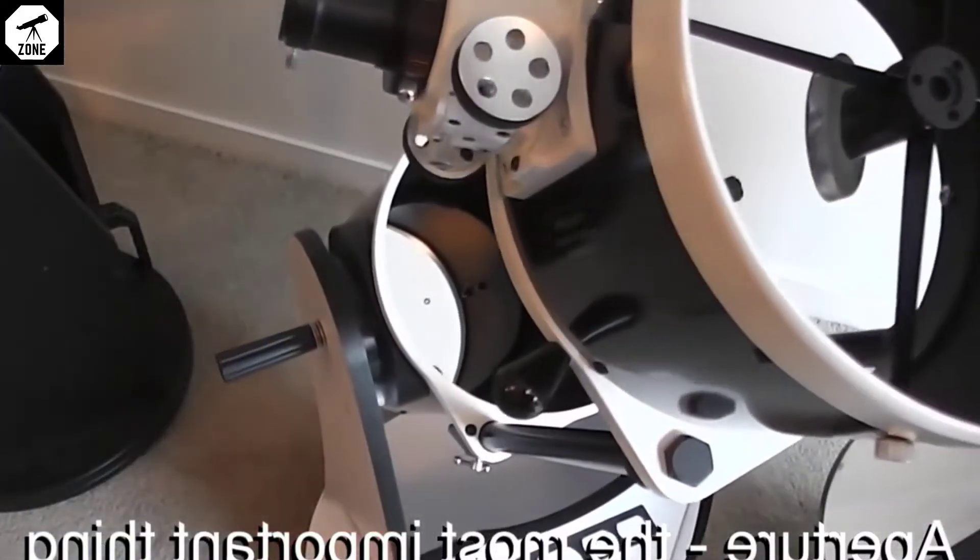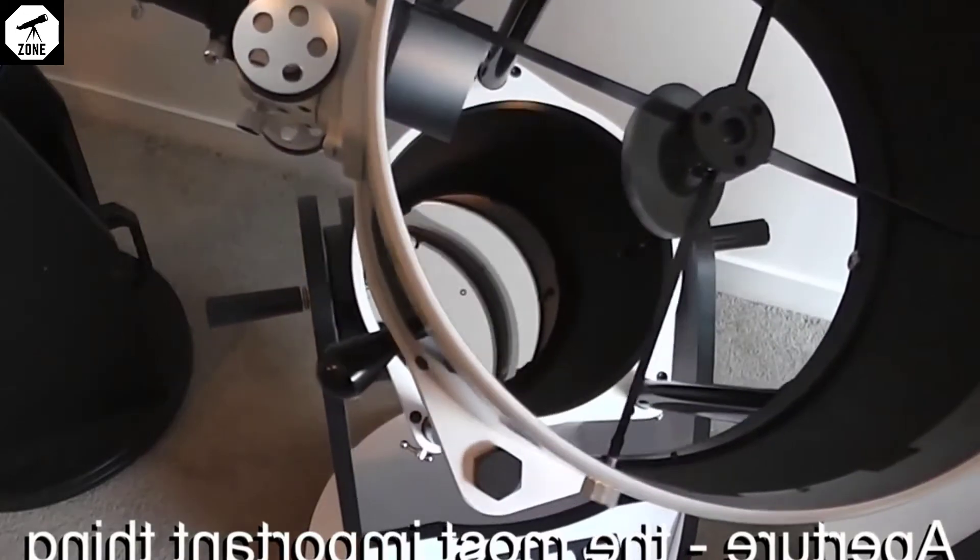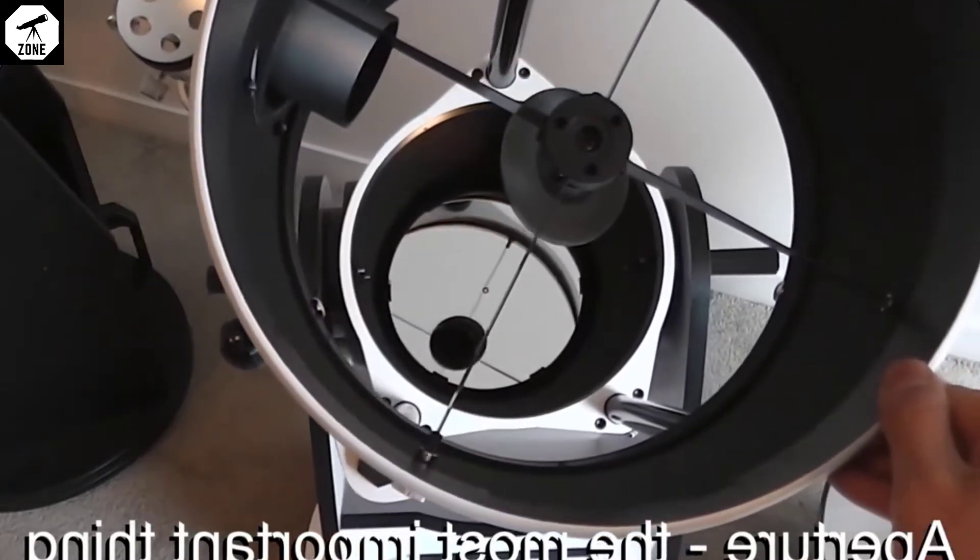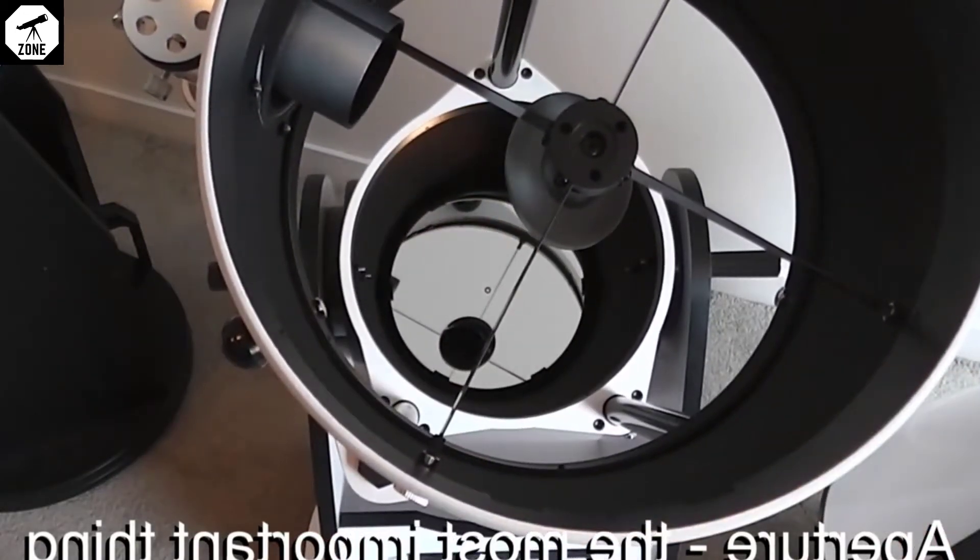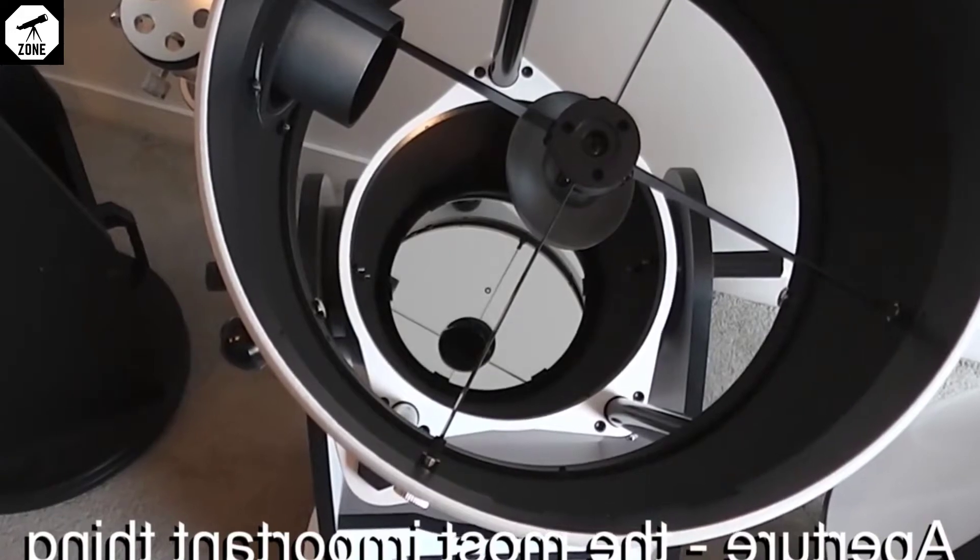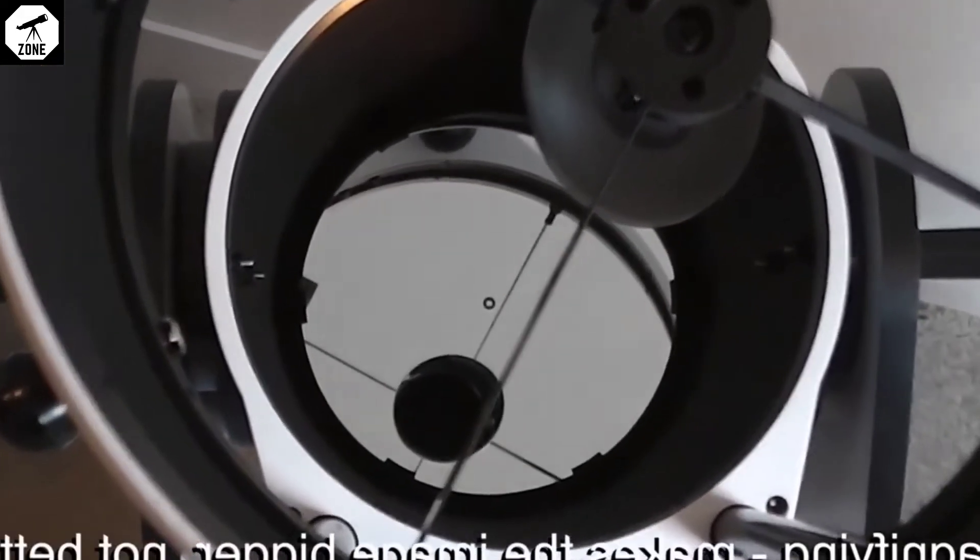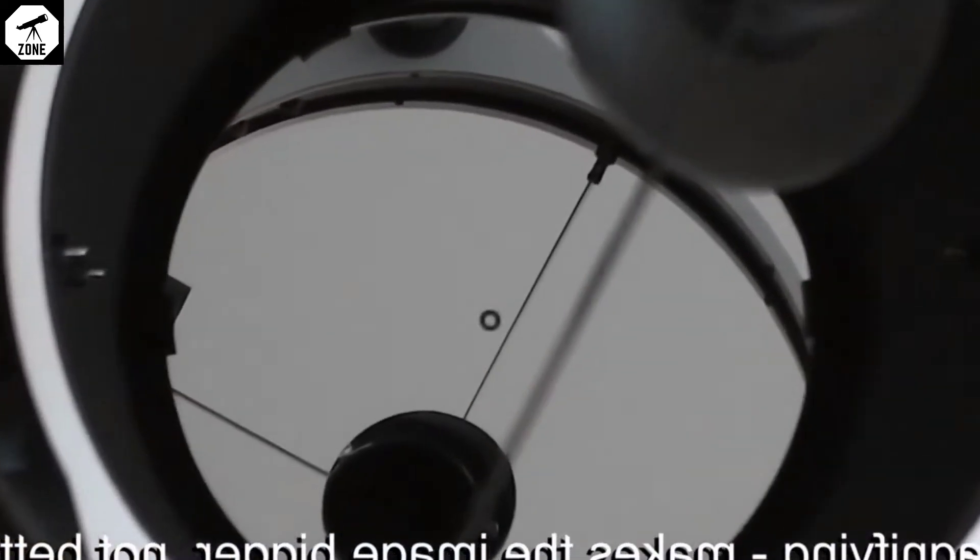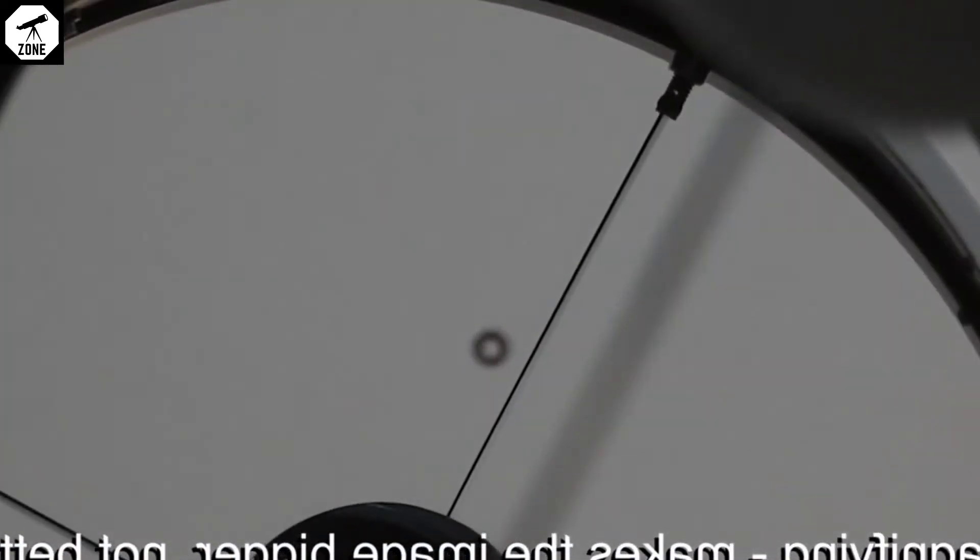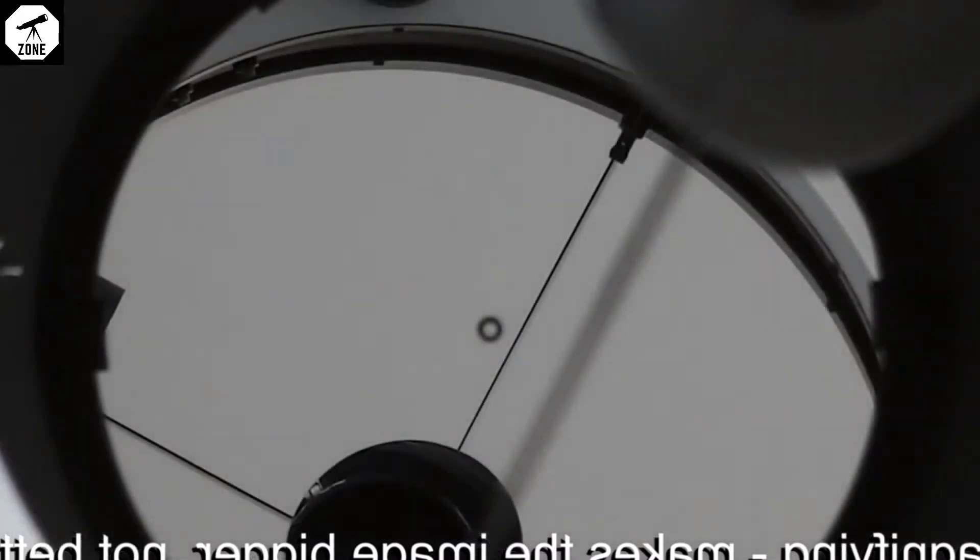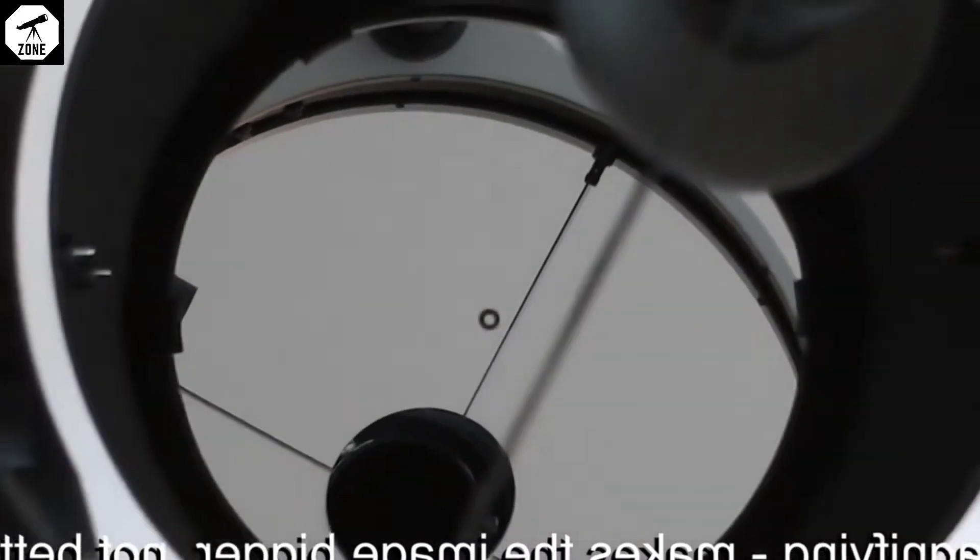With a telescope the most important thing is the aperture, that is the size of the mirror. The larger the mirror the more light you capture so the more detail you see in an object. Magnification is not so important as this is just based on the eyepiece you're using. Magnifying just makes the image bigger, not better.